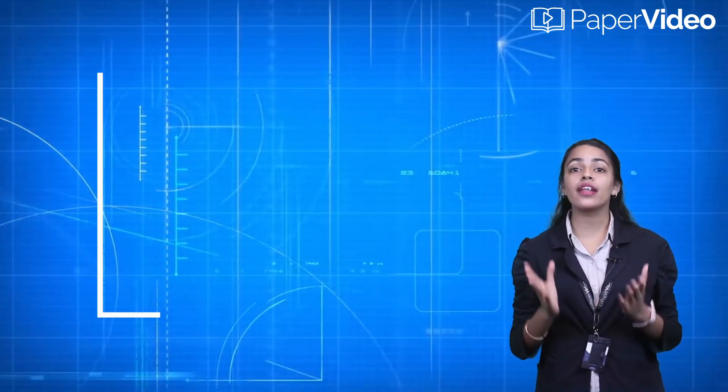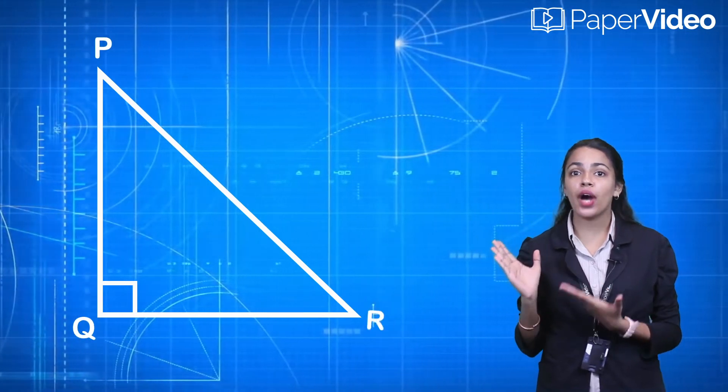What is the theorem of geometric mean? To understand it, let's draw a right angle triangle PQR.